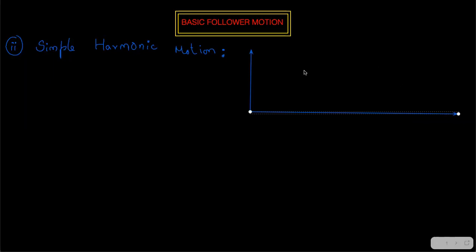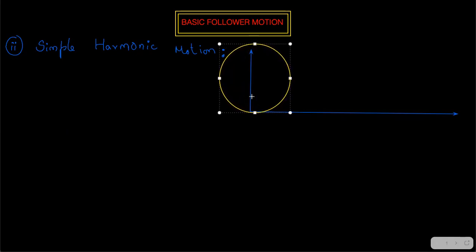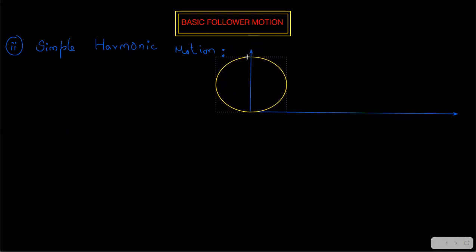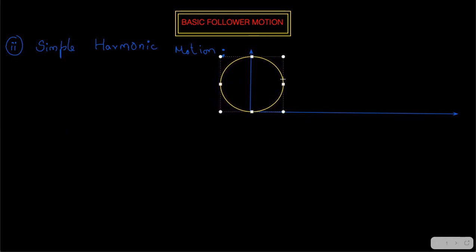Simple harmonic motion is a motion where there is a particle on a circle. We trace the path of the particle on the y-axis — that is your simple harmonic motion in a common context. Right now we are going to take only half of the circle to trace the simple harmonic motion.